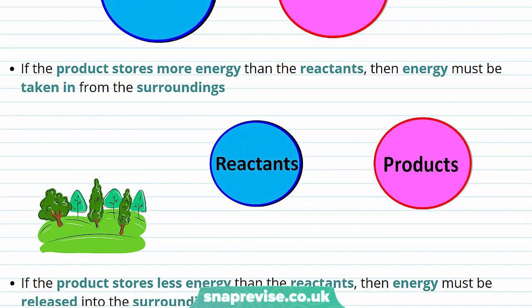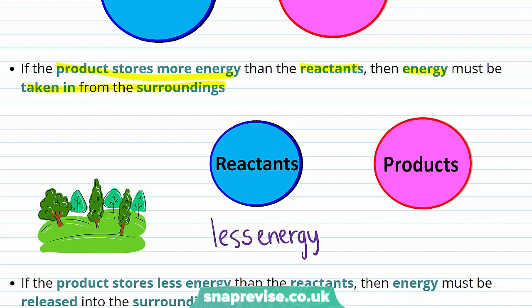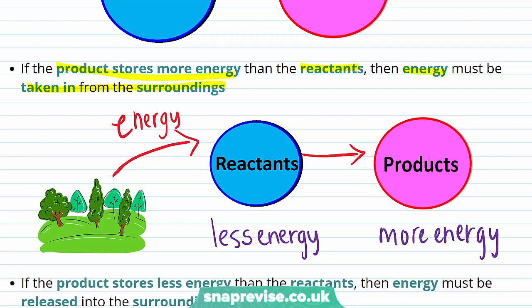In the first case, the product stores more energy than the reactants. The additional energy that's present in the products that was not present in the reactants must have been taken in from the surroundings. We can illustrate this example on this diagram here, where the reactants have less energy than the products. But this energy, in order to transform the reactants into the products, must have come from somewhere, and this is from the surroundings. The surroundings just means the space around the reaction that is taking place.